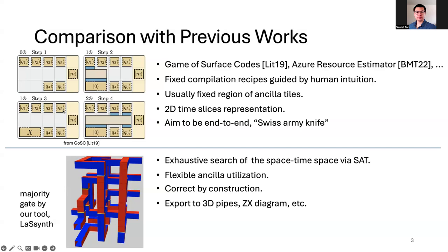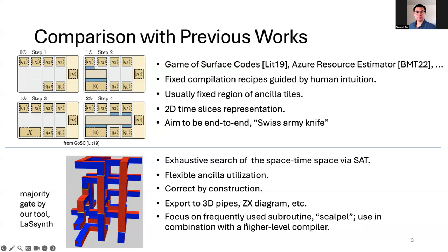Visually, previous work generates 2D time slices, while our tool exports to 3D pipe models rendered from a modeling file directly generated by our compiler. We can also export to ZX diagrams. As a summary: previous works aim to be end-to-end, like a Swiss army knife — you can throw any quantum algorithm at them for compilation and resource estimation. Our work focuses on frequently used subroutines, which is why we call it a 'scalpel' in the title. It can be used as a component in a higher-level compiler.